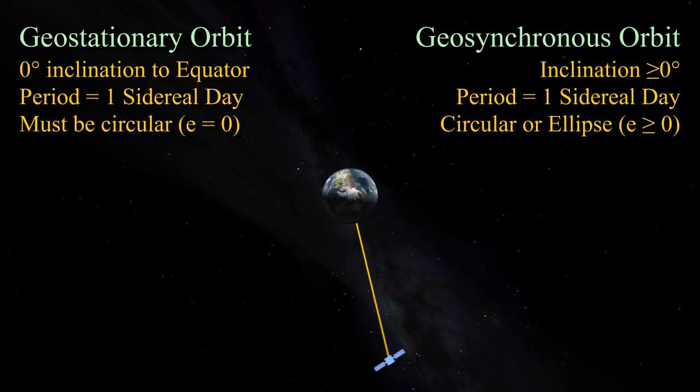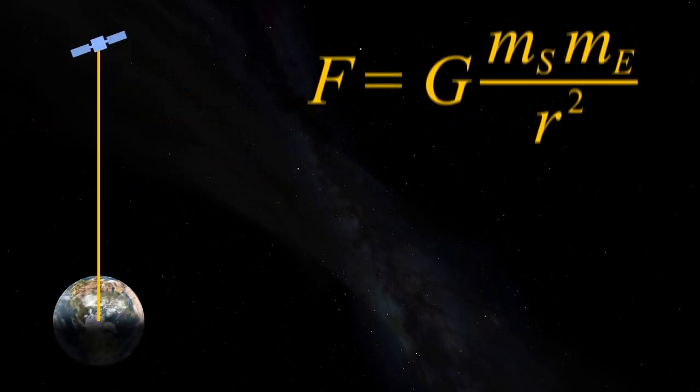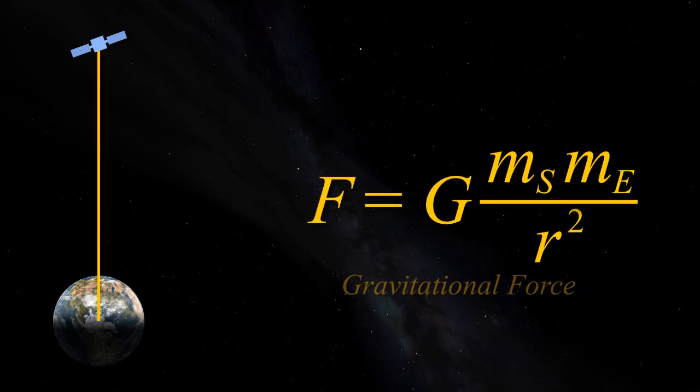Two orbits with the same semi-major axis will have the same orbital period, so this is what allows for the distinction. We'll use a circular orbit here since we're talking about a geostationary satellite.